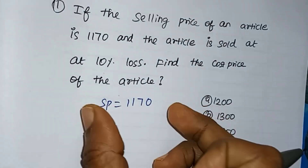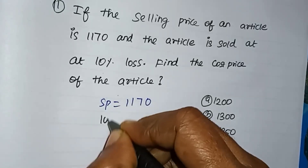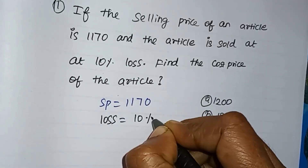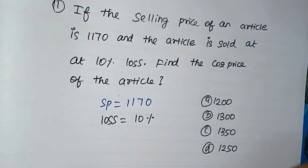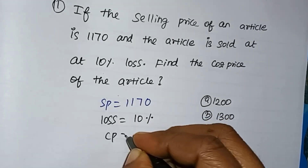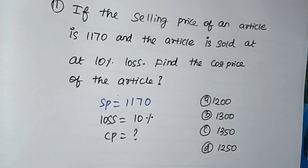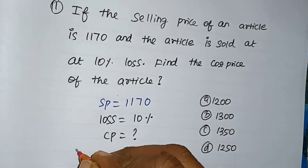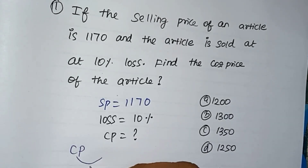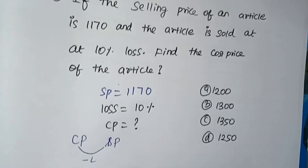The selling price is given. If you get the loss of 10%, what we are going to do is find the cost price. We need to understand the relationship between cost price and selling price. If there is a loss, the selling price is less than the cost price.